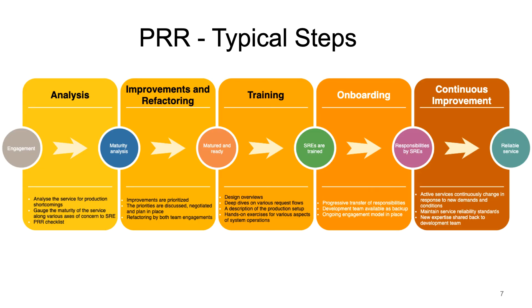What are the typical steps involved in PRR? There are five steps, starting with analysis. The developers will engage the SRE team, where some SRE team members — probably called a sub-team — will help in analyzing the current product. On the service or production shortcomings, they will gauge the maturity of the service along with various areas of concern to SRE, and they come up with a PRR checklist.